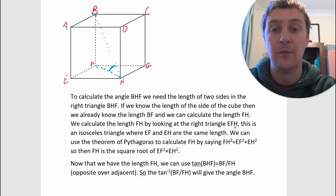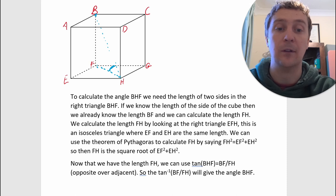So now we've got FH, this length here. Now that we have the length FH, we can use tan of BHF—this angle—is equal to BF over FH, which is the opposite over the adjacent. So then tan inverse of BF over FH will give the angle BFH.